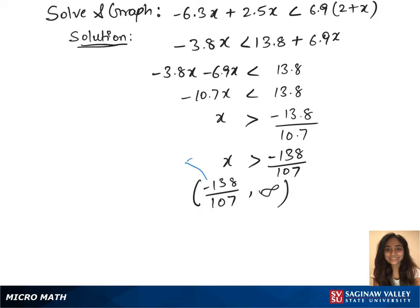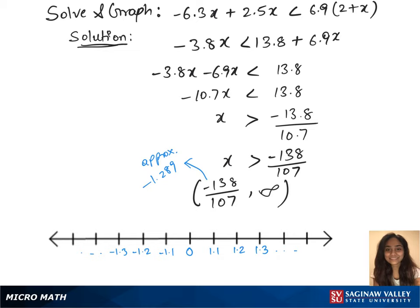This fraction is approximately close to minus 1.289. So we'll plot in decimals on the number line. And look for minus 1.289 on the graph and mark it. That extends to infinity, so mark that, and shade the region in between those two points.